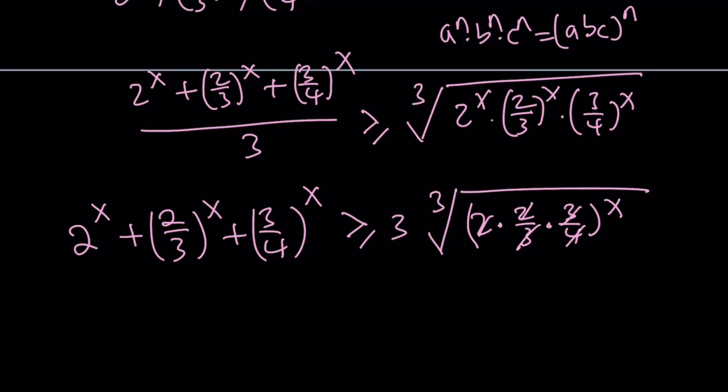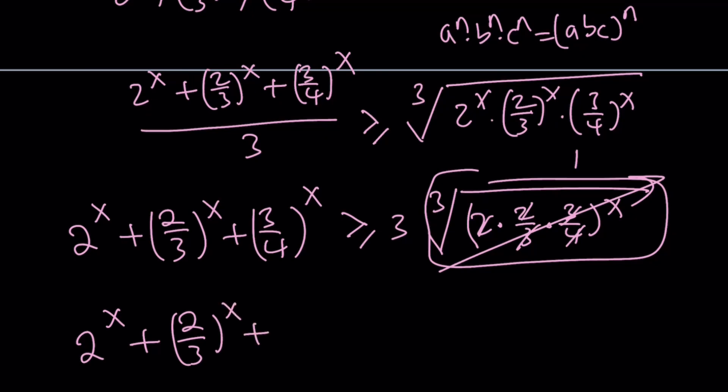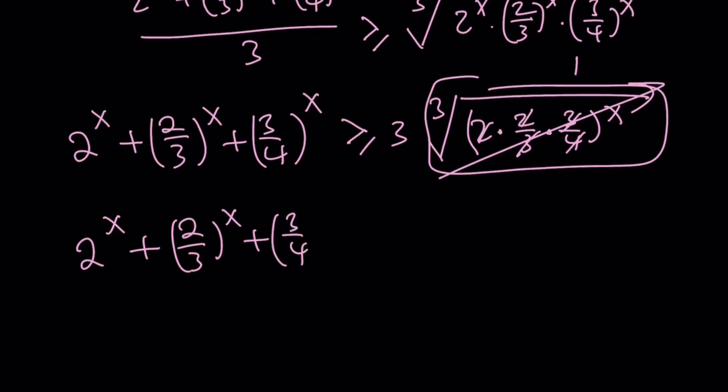But 1^x is also 1, and the cube root of 1 is 1. So the whole thing becomes 1, so we don't really have to worry about it. We can just ignore it. So now we get: 2^x + (2/3)^x + (3/4)^x is greater than or equal to 3. This is a really good result. Great.